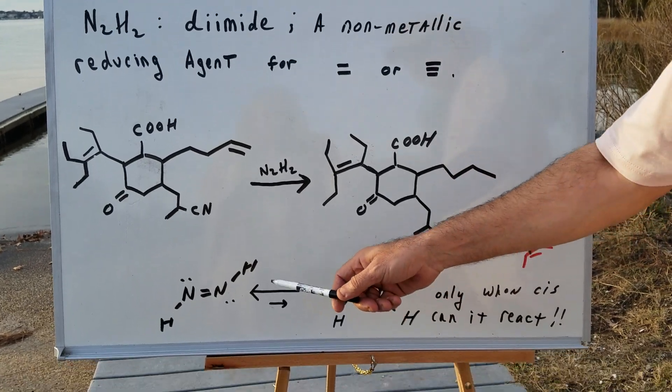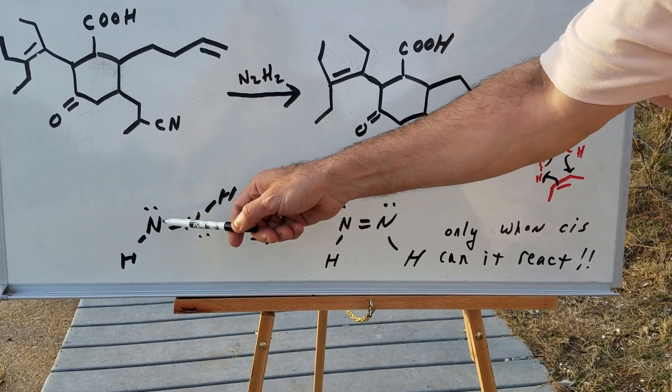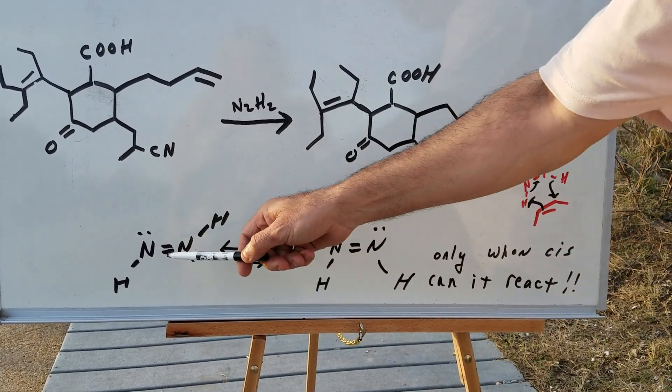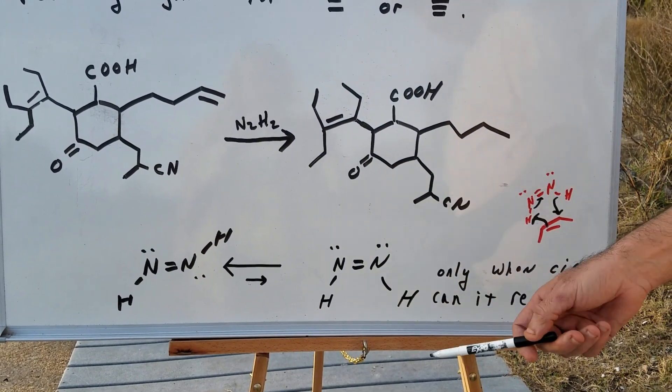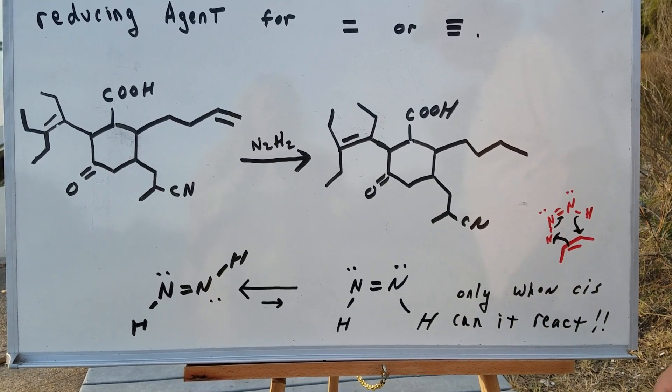For those that are curious, this is what diimide looks like. Now, notice, the H's can be on opposite sides, or the H's can be on the same side. This is trans. This is cis. I know you probably thought cis and trans is only for carbon with double bonds. That's wrong.